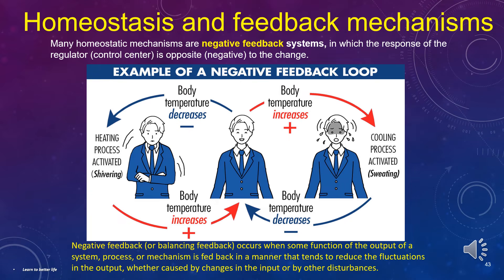Many homeostatic mechanisms are negative feedback systems, in which the response of the regulator or control center is opposite — negative — to the change. Negative feedback occurs when some function of the output of a system or mechanism is fed back in a manner that tends to reduce the fluctuations in the output. For example, if the body temperature decreases, the heating process is activated, causing the body to shiver. The shivering causes the body temperature to increase to keep the body warm and brings it back to homeostasis.